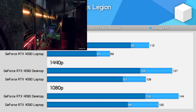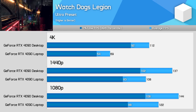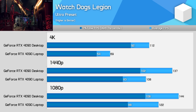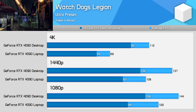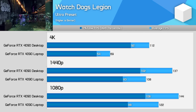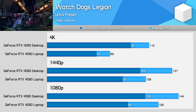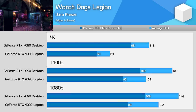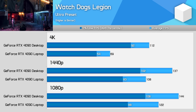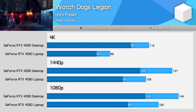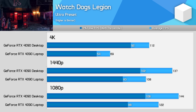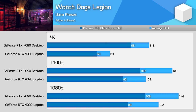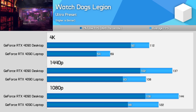Watch Dogs Legion is interesting here. At 1080p, we're looking at similar margins to Assassin's Creed, with the desktop 18% ahead. At 1440p, it's a smaller margin than seen previously, with the desktop 4090 coming in 27% faster, but then at 4K, the beefy 450-watt GPU is able to fully flex its muscles and sit a huge 62% faster. This is the difference between an experience around 70fps and around 110fps, which is certainly huge for those with a high refresh rate 4K display.